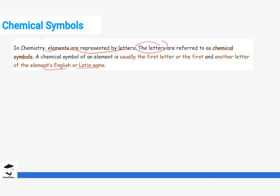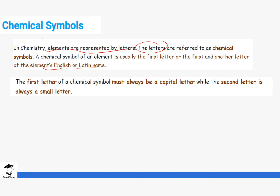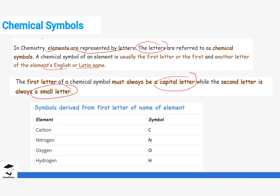There are specific rules on how we write chemical symbols. The first rule is: every time a chemical symbol has more than one letter, the first letter will always be a capital letter and the second letter will always be a small letter. This applies whether the symbol is derived from the English name or the Latin name.